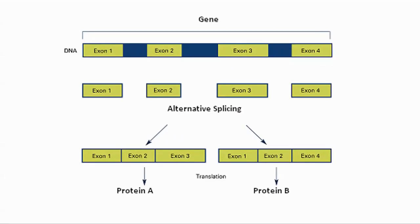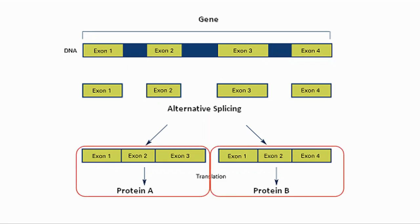There is one more important complication: not all of the exons are included in each protein. Through a process called alternative splicing, different proteins will be made based on the exons which are included or excluded, and therefore alter the expression of the gene. What impacts the splicing factors in the alternative splicing and how it changes with age is our first topic in the interview.